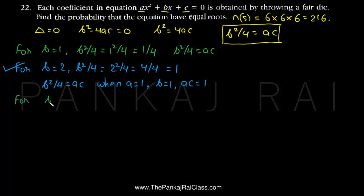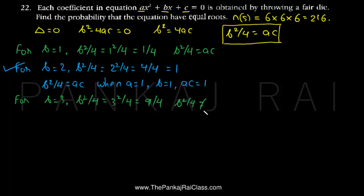For b = 3, b²/4 = 9/4, which is a fraction. There cannot be any values of a and c from 1 to 6 for which the product ac equals 9/4, so b²/4 cannot equal ac in this case.